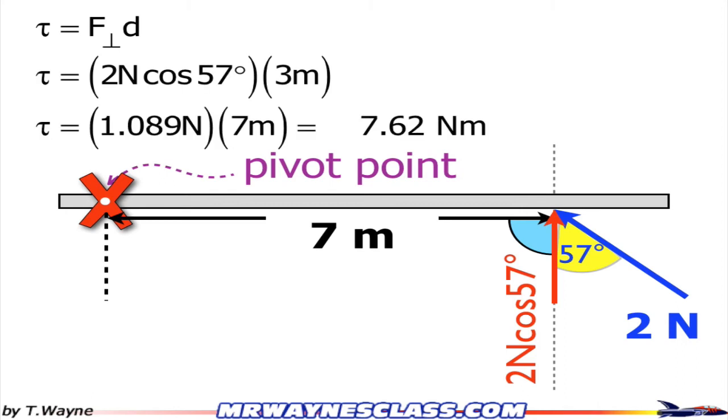So the torque, abbreviated with a Greek symbol tau, looks kind of like a capital T that's fancy, is the perpendicular component of the force times distance. In other words, force and distance vectors have to be 90 degrees from each other. And in this case, that's going to be 2 newtons cosine 57 degrees times 3 meters. So the torque is equal to 7.62 newton meters.